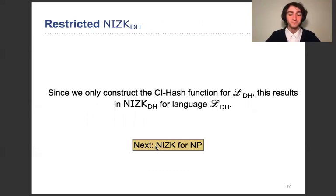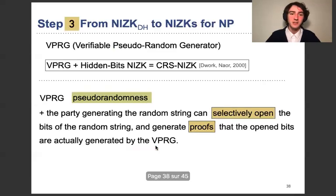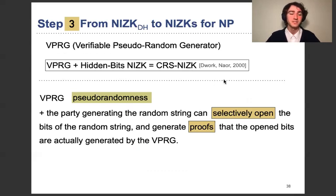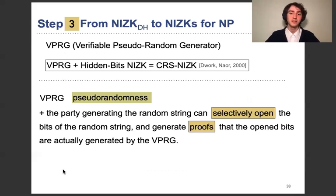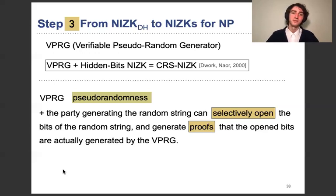The question remains how to construct NIZKs for NP. As mentioned, this is the third step involving the verifiable pseudorandom generator. We know that VPRGs and hidden bits NIZKs imply CRS NIZKs for NP from previous results. The VPRG: just as a pseudorandom generator, the output string has pseudorandomness. But we also want that the party generating a random string can selectively open some bits and generate proofs that these bits were computed honestly, while the other bits that are not opened remain hidden. This allows someone to implement exactly the hidden bits model.